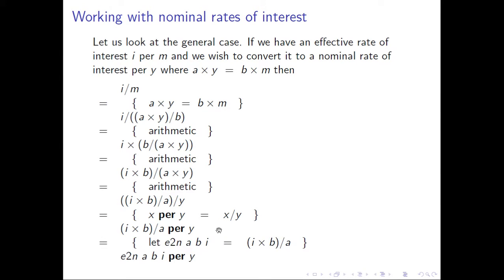We introduce a function e2n. Given a, b, i — e2n(a, b, i) is defined as i×(b/a). So i per m is the same as e2n(a, b, i) per y. In other words, i per m effective equals e2n(a, b, i) per y nominal.